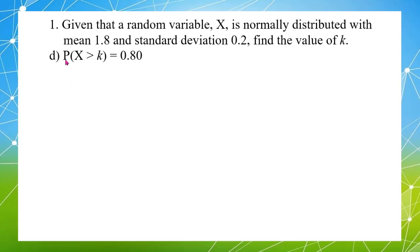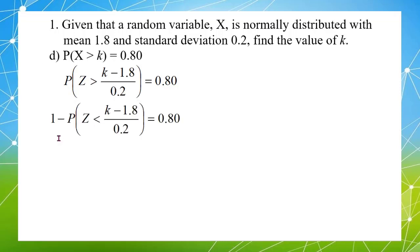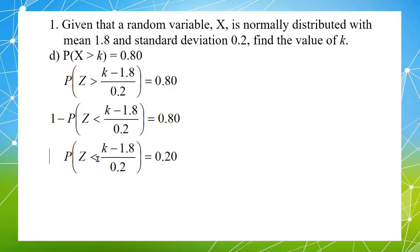Question 4: the probability that X is greater than k equals 0.80. Find the value of k. Changing X into Z gives probability Z greater than (k minus 1.8)/0.2 equals 0.80. Same as question 3, this is a greater-than expression, so I change it using 1 minus, then rearrange to get probability Z less than (k minus 1.8)/0.2 equals 0.20.